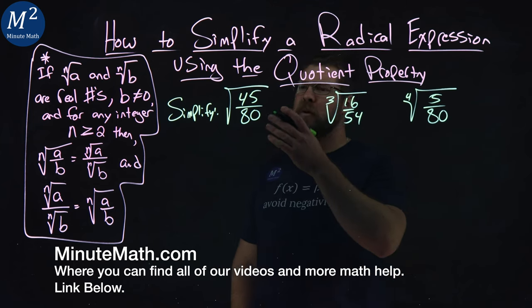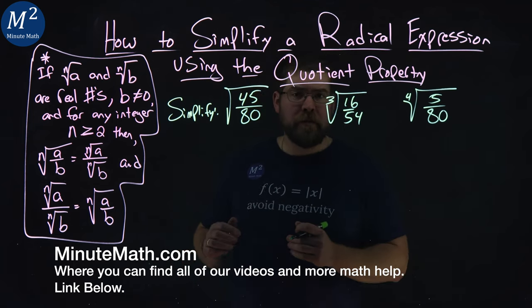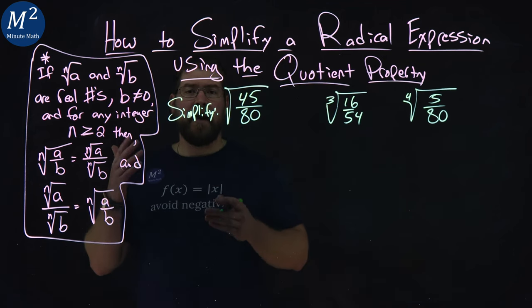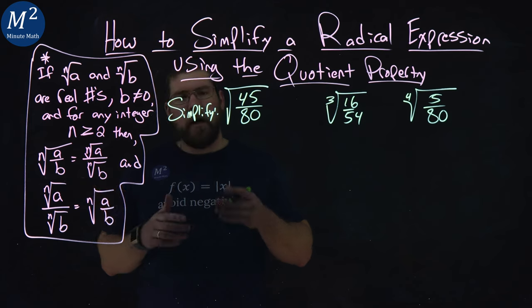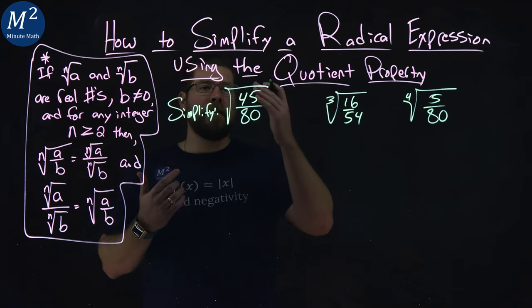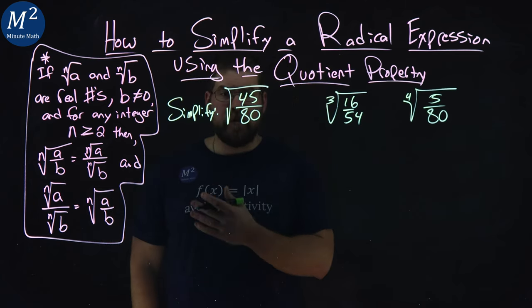We're given three things we want to simplify and we're going to use the quotient property to do that. The quotient property basically tells us if we have an nth root of a fraction that we can take the nth root of the numerator and denominator individually. So that's it basically in a nutshell and vice versa.